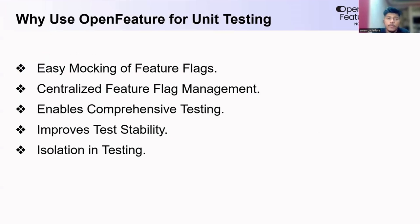Why use Open Features for testing? First, easy mocking of feature flags — Open Features makes it simple to mock feature flags so you can easily test features in different states without complex effort. Second, centralized feature flag management — Open Features provides a single place to manage all your feature flags, making tests more organized and reducing the need to handle flags in multiple places. You can use these features in different environments: dev, SIT, staging, replica, production — all your environments can be managed in one way.